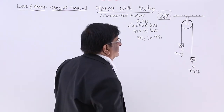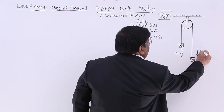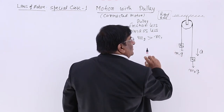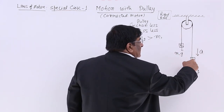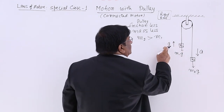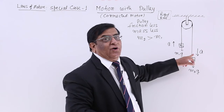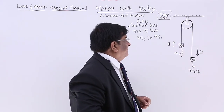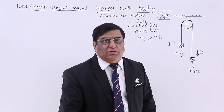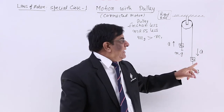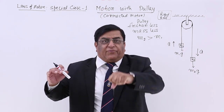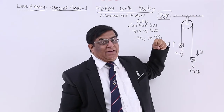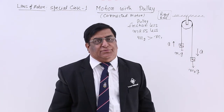Suppose that acceleration is equal to A. Because M2 is heavier, its force will be larger and M2 will go down while M1 will go up. Since they are connected with one string, if M2 goes down with acceleration A, M1 must go up with the same acceleration A — this length cannot increase or decrease. So if it is coming down with acceleration A, it is going up with acceleration A.